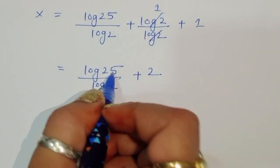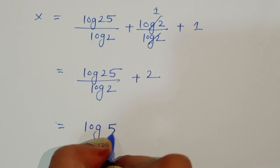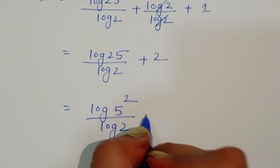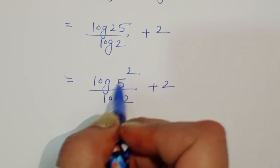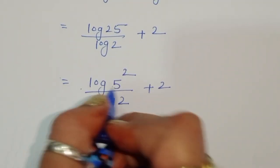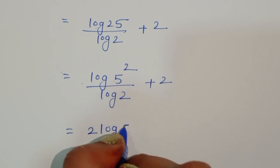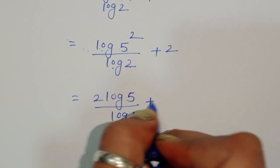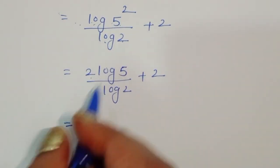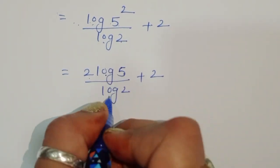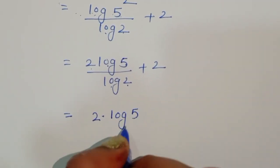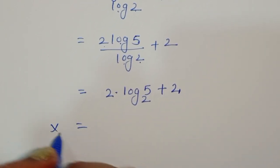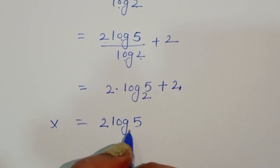Now 25 is 5 squared, so log of 25 is log of 5 square, which equals 2 log of 5 by the power rule. So we have 2 log of 5 divided by log of 2, plus 2. This can be written as 2 times log of 5 to the base 2, plus 2. So x equals 2 log₂5 plus 2.